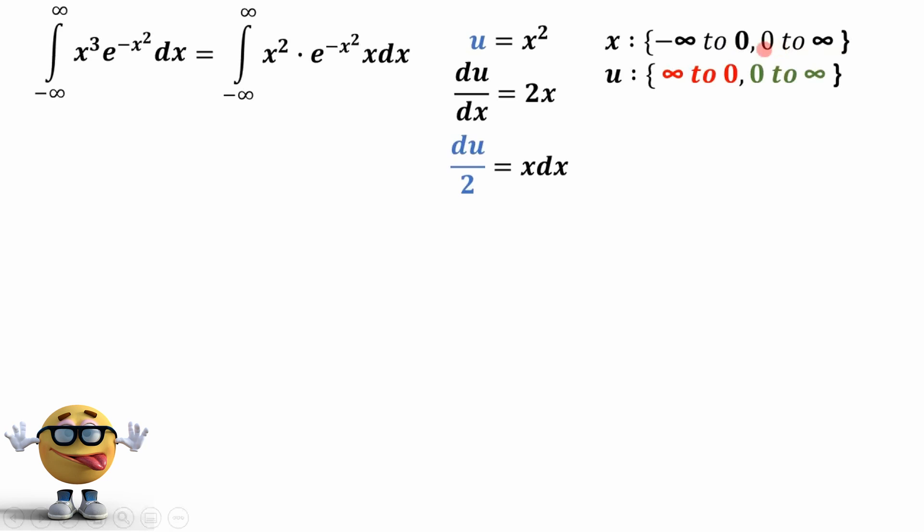And the reason we want to split this up is because the limits of integration for u are going to change. As x goes to negative infinity, u goes to infinity because the negative squared becomes positive. And as x goes to 0, u also goes to 0. And as x goes to infinity, u goes to infinity.